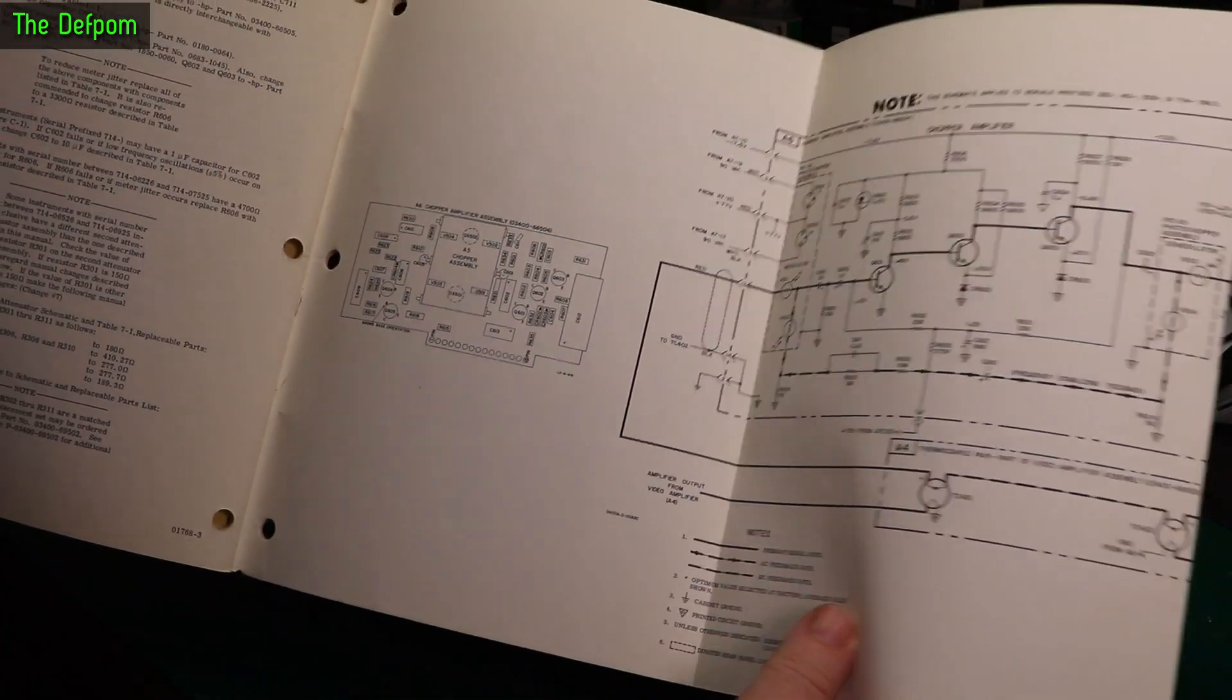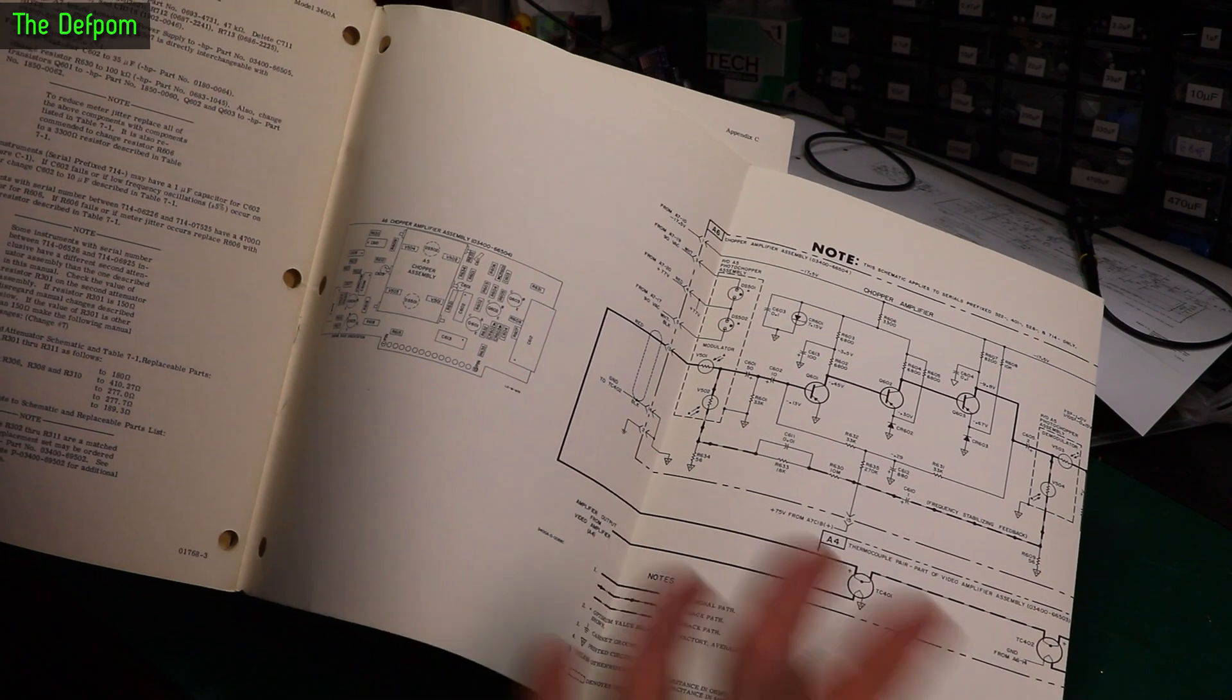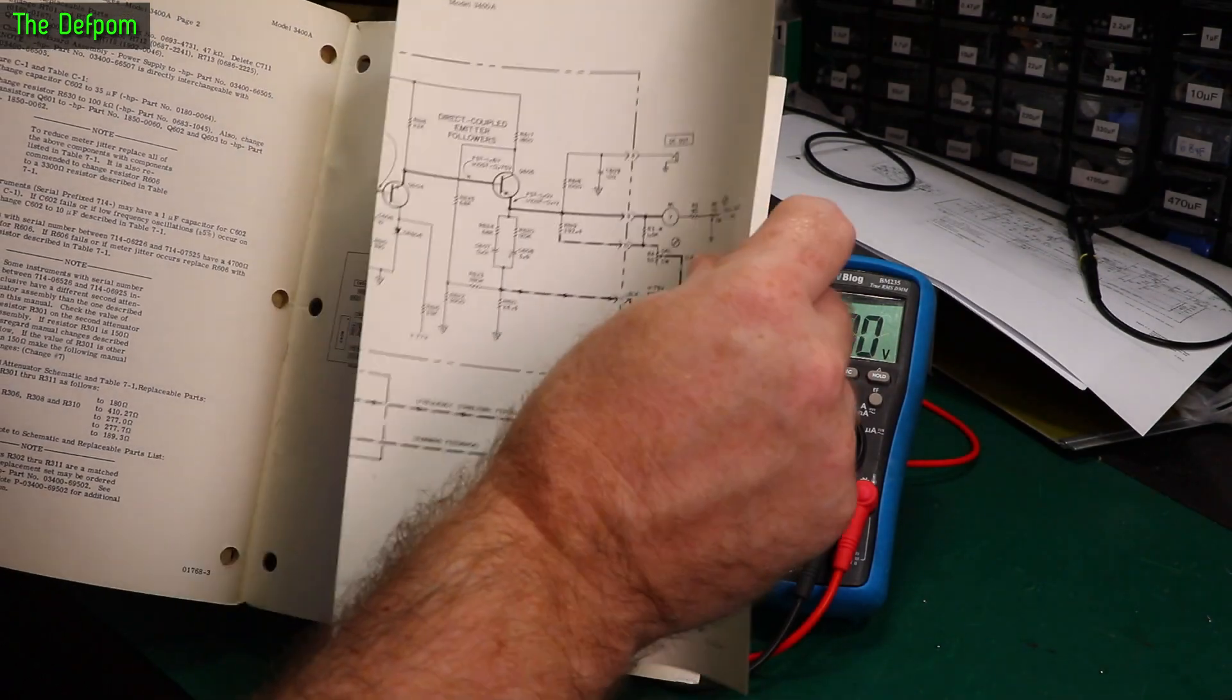So let's do some voltage checks now on the transistors themselves, because I've done just about everything else. I've recapped it and that sort of thing, and it's still playing up. So now I'm tracking down the actual voltage, because it does actually have some voltages showing in the diagrams here.